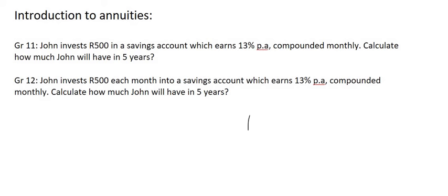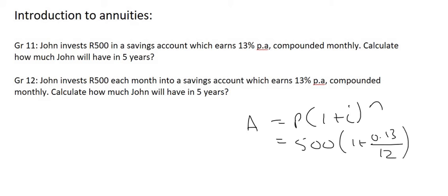So for that type of question you would simply use the compound interest formula where your starting amount would be 500 Rand, your interest would be 13% which is 0.13. You would compound it monthly and for five years you would say five times twelve.